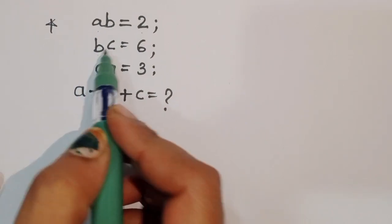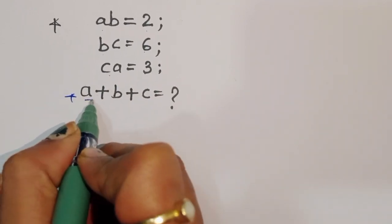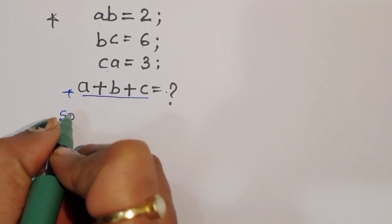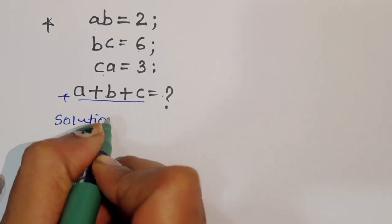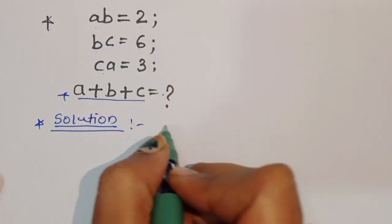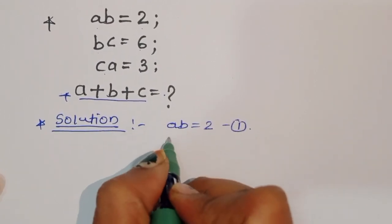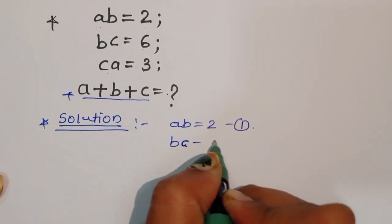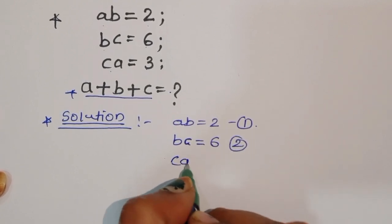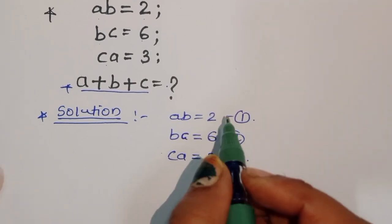Given ab is equal to 2, bc is equal to 6, and ca is equal to 3, we have to find out the value of a plus b plus c. Let's start the solution. First, what is given: ab is equal to 2 — this is equation 1; bc is equal to 6 — this is equation 2; and ca is equal to 3 — this is equation 3.